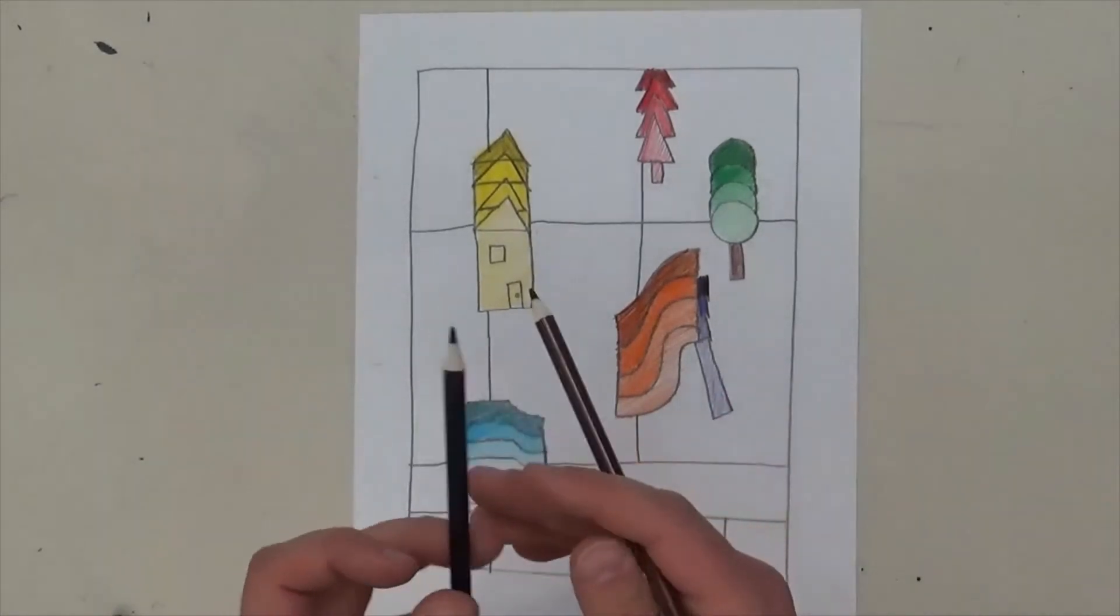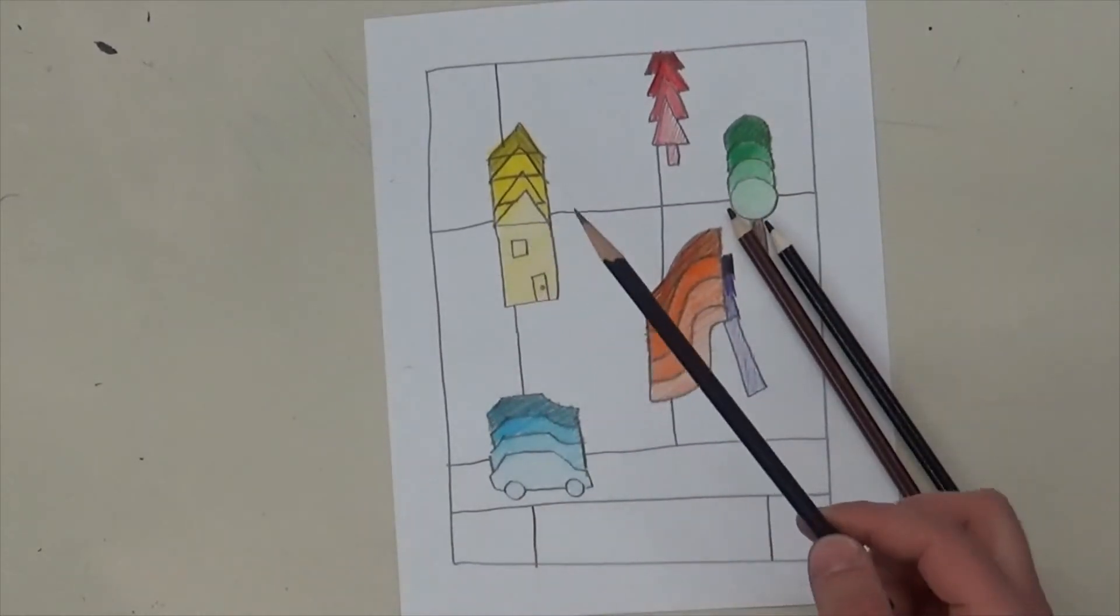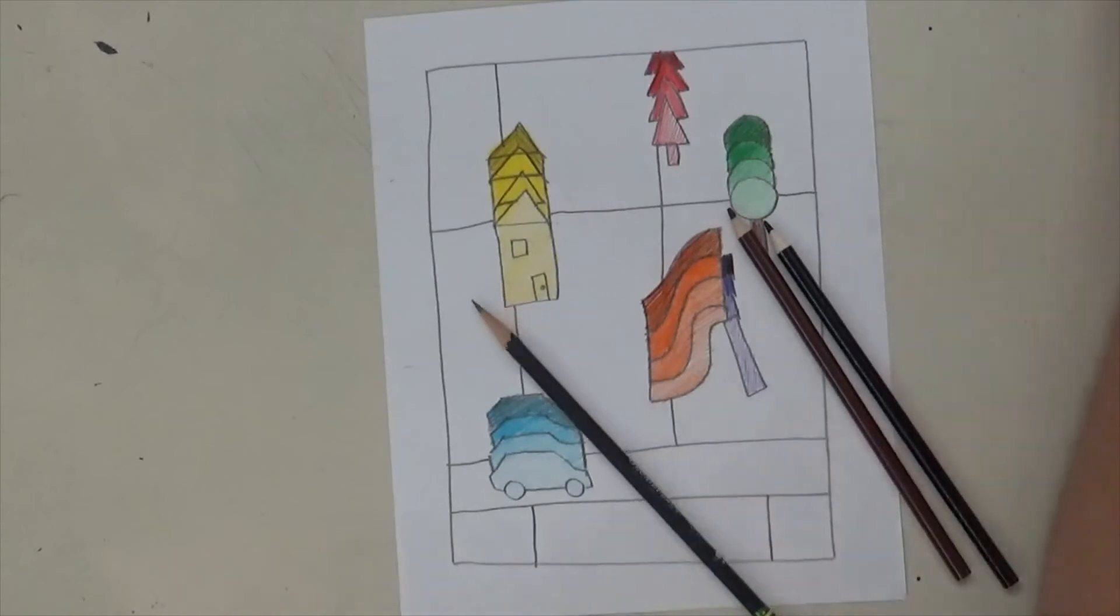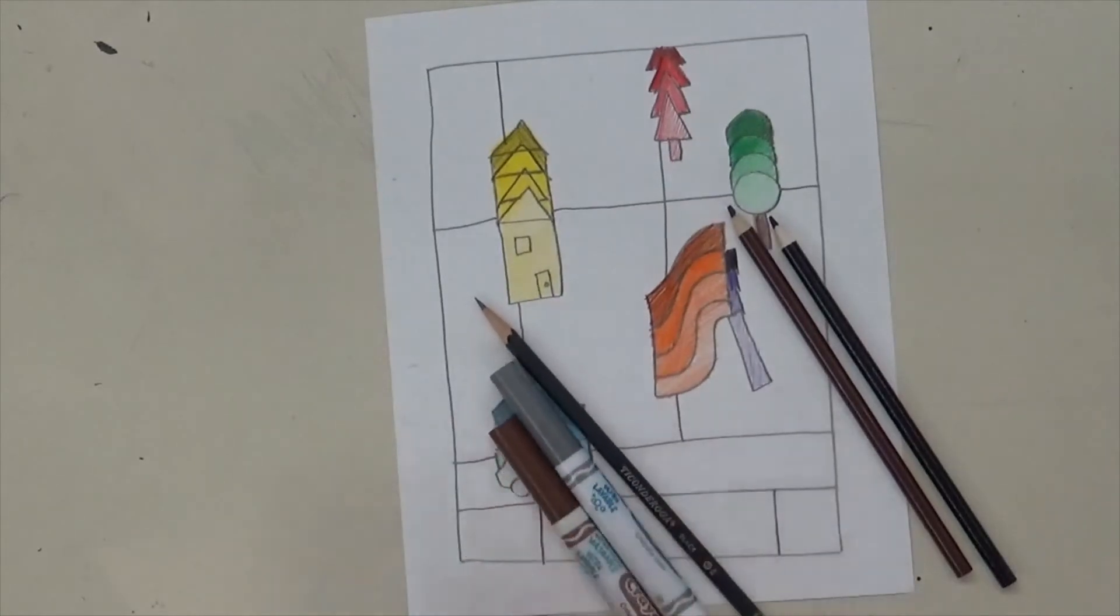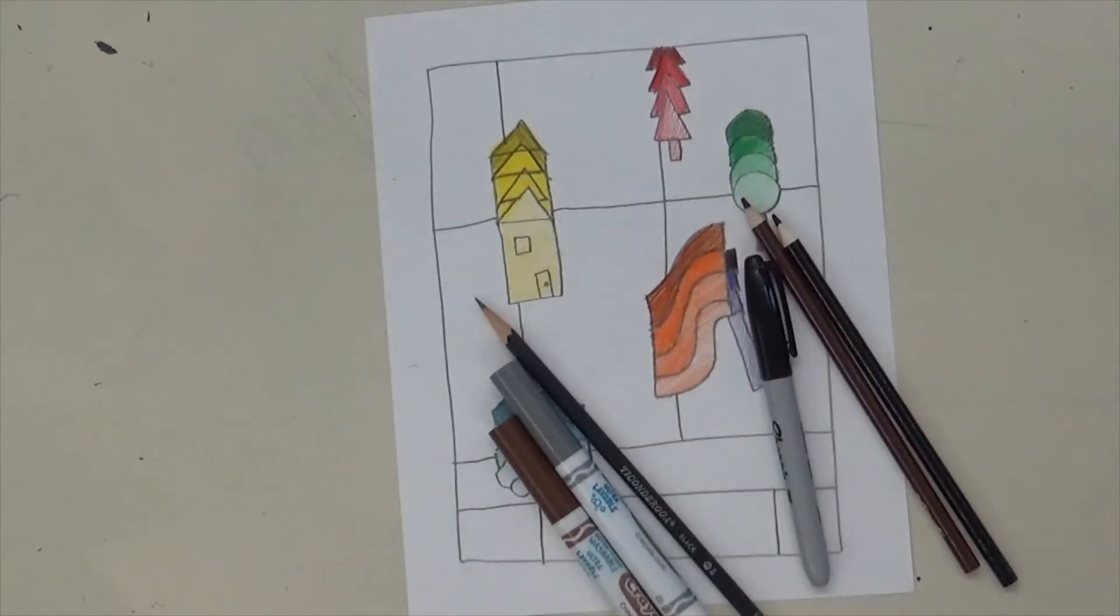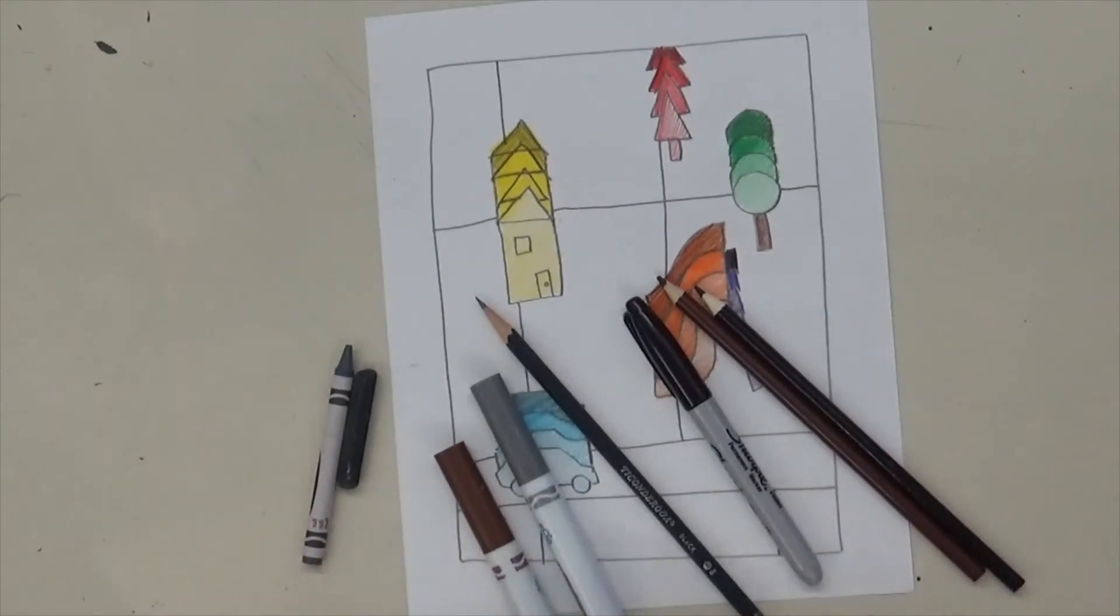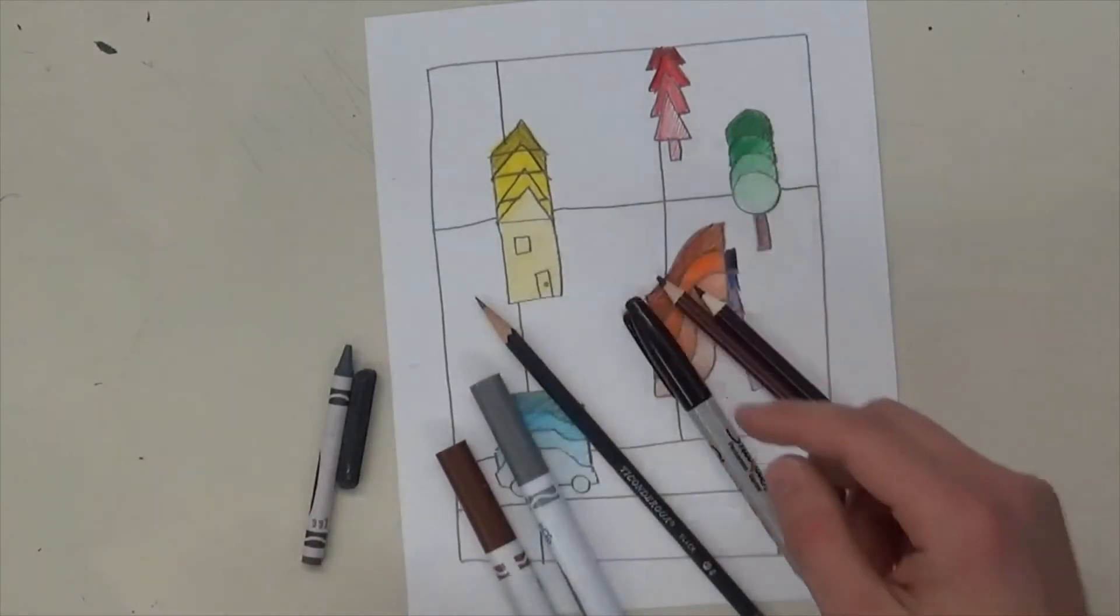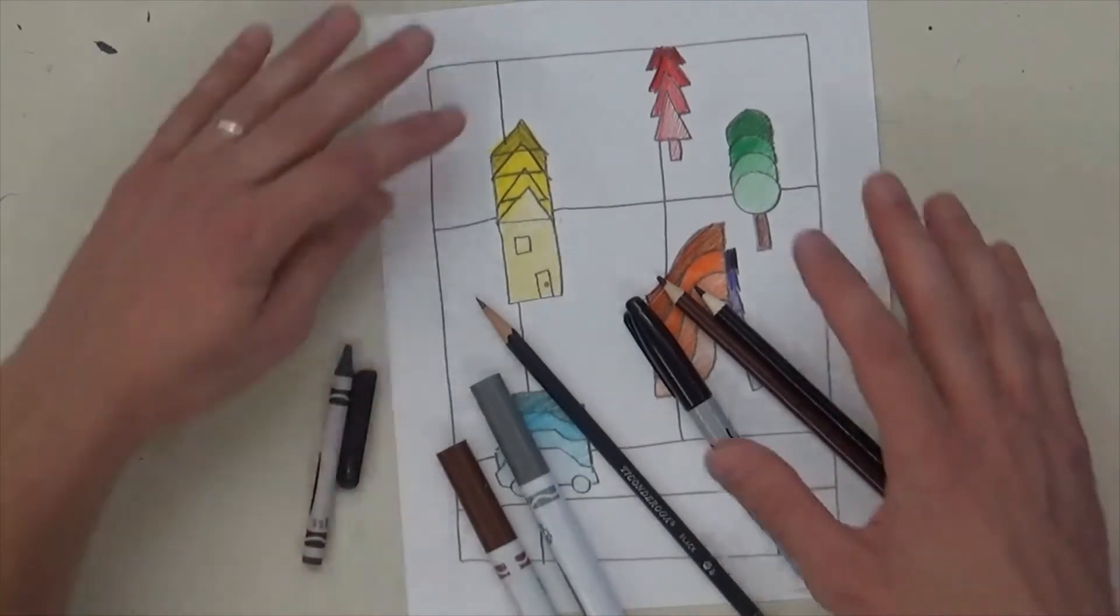So you could use black and brown colored pencils if you want to do that. You could use a regular pencil because it already is gray. And you can get different values for that. You could use markers for that. You could use a Sharpie. Or you could use crayons. So it's up to you. You could even use paint if you have it. So we're just going to color the background and make it neutral. Let's do it.